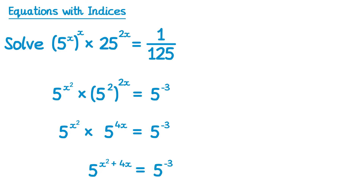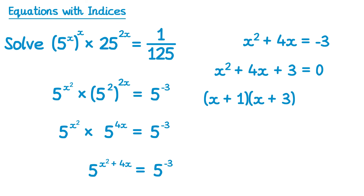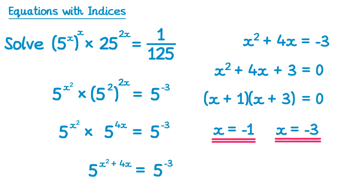Now we've written both sides as a single power of 5, we can just compare the indices. So x squared plus 4x must be the same as negative 3. We can write the equation x squared plus 4x equals negative 3. Adding 3 to both sides gives x squared plus 4x plus 3 equals 0, which is a quadratic equation. Fortunately this factorises as (x + 1)(x + 3) equals 0, giving two solutions: x equals negative 1 and x equals negative 3.